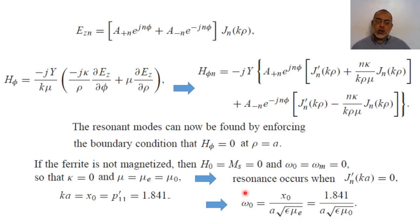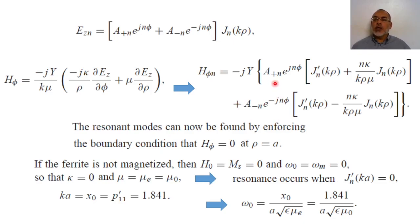It should be noted that this resonant frequency is independent of the direction phi. If the amplitude of mode +n is zero and only mode −n is present, the resonant condition is J'_n(ka) = 0. Conversely, if mode −n amplitude is zero and only mode +n is present, the resonant condition is also J'_n(ka) = 0. So this resonant condition is valid for either mode +n or mode −n.